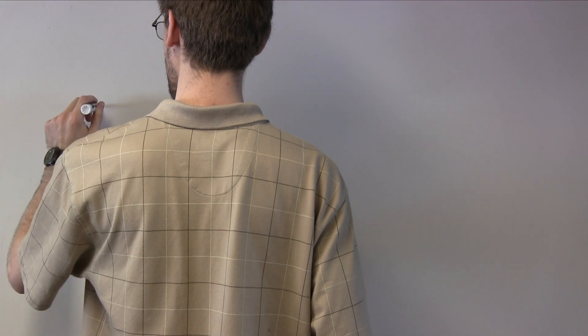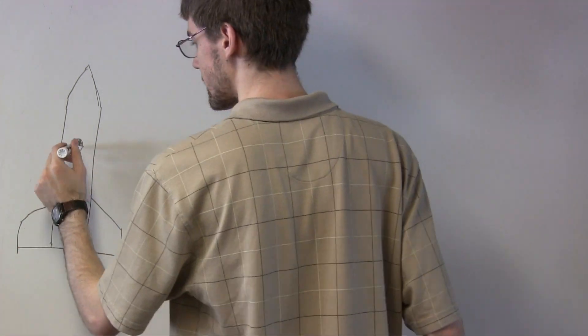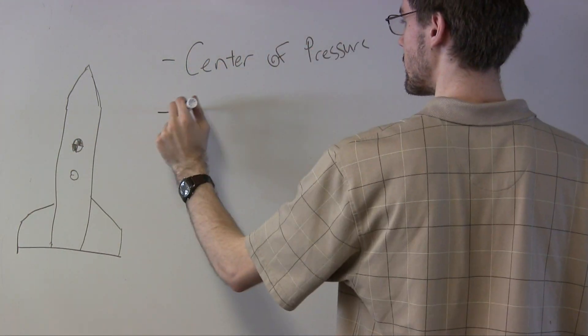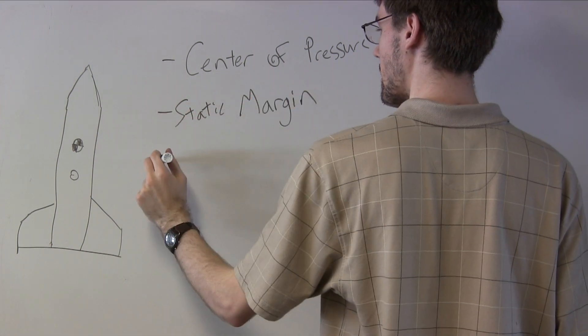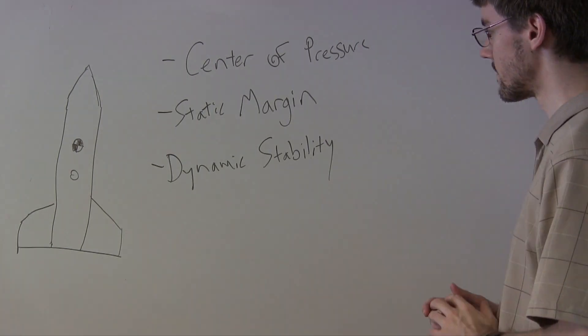So now we know enough that we don't have to rely on the rule of thumb and hope our rocket turns out to be stable. With our knowledge of the center of pressure, the static margin, and dynamic stability concerns, and with model rocket simulation software that can help us compute these things, we can keep our rockets flying high and safely.